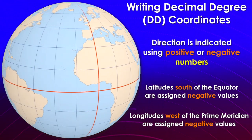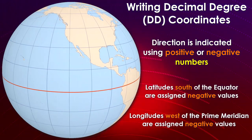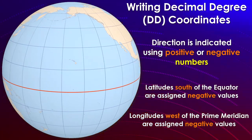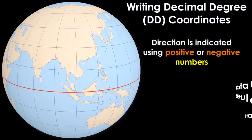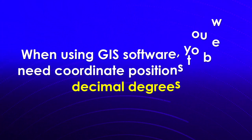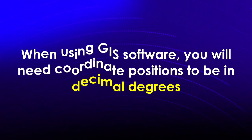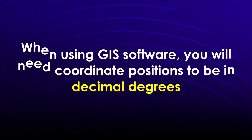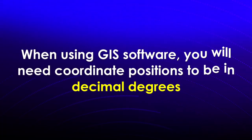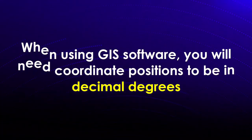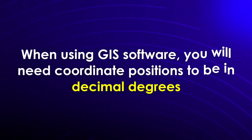If you have a decimal degree longitude position in the middle of the continental United States and you forget to use the negative sign, you'll end up mapping that position most likely in China. One of the reasons for two methods of displaying coordinates is that computer software does much better when it has coordinate positions in decimals rather than three separate values for degrees, minutes, and seconds. As we saw with Cartesian coordinates, positive and negative values are easy to deal with as well.